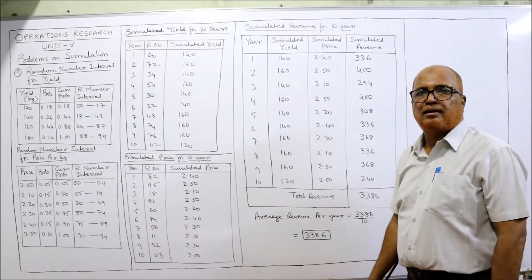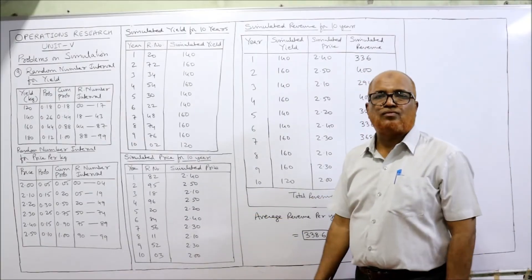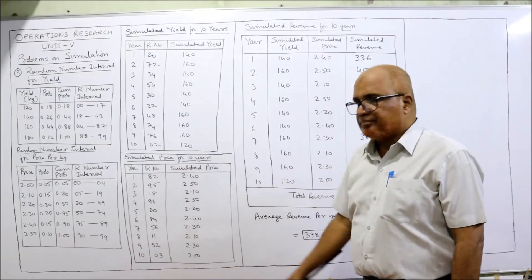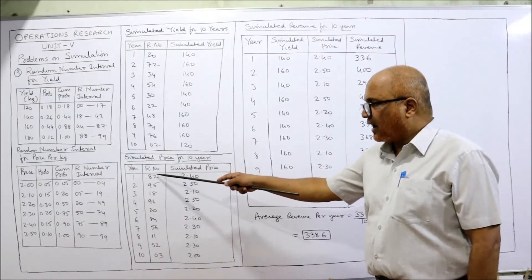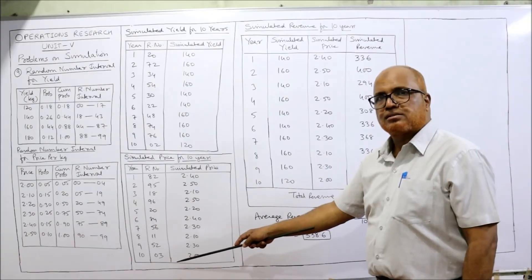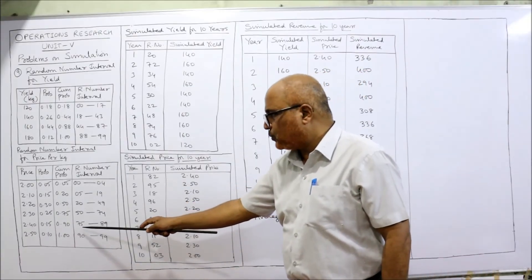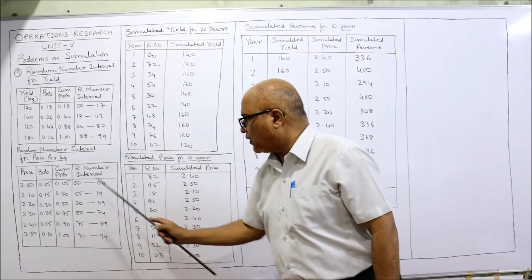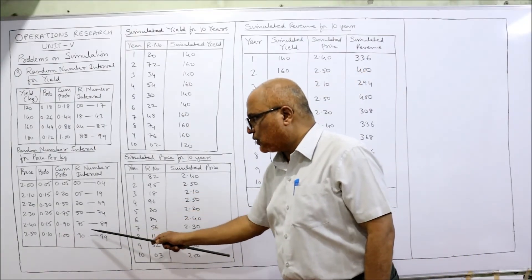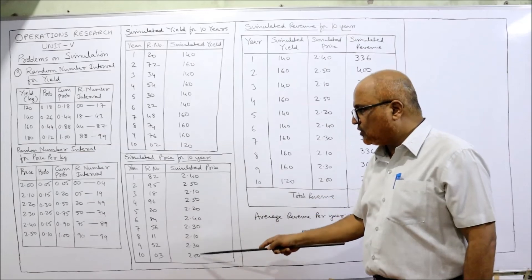Similarly, we simulate the price for the next 10 years. Ten random numbers are given for prices. For example, random number 82 falls between 75–89, giving a price of 2.40. Random number 95 falls between 90–99, giving a price of 2.50. Find the simulated price for each of the 10 years in this way.